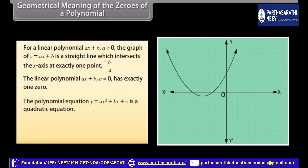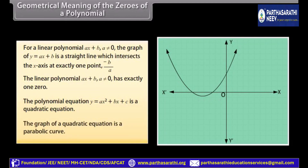The polynomial equation y equals ax squared plus bx plus c is a quadratic equation. The graph of a quadratic equation is a parabolic curve.